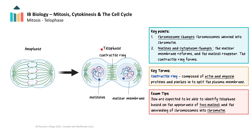Telophase is the fourth and final stage of mitosis, following anaphase. This phase is crucial for reestablishing normal cellular structures in the two daughter cells. The reformation of nuclear envelopes occurs around each set of chromosomes at the two poles of the cell, reestablishing the nucleus in each daughter cell. The nucleolus, a dense region where ribosome synthesis occurs, reappears within each new nucleus. The chromosomes begin to uncoil and return to their less condensed chromatin state, making genetic material less visible under the microscope. In animal cells, the contractile ring, composed of actin and myosin proteins, starts to form and has an important role in cytokinesis. You can identify telophase by the appearance of two daughter nuclei and the unwinding of chromosomes into chromatin.